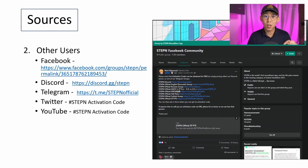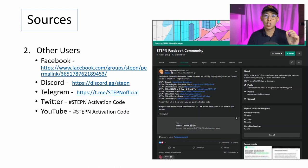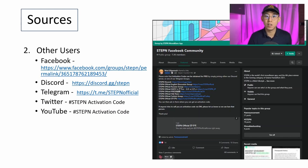The second source where you can get activation codes is from other users. It could be from your friends who are already on the app — they can generate a code for you and you can log in and activate your account using that code. Or you can look for other members in the community to provide you the activation codes that they have generated through their physical activity.